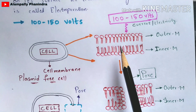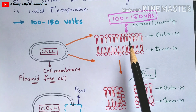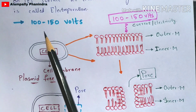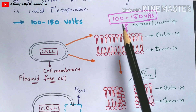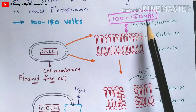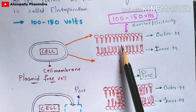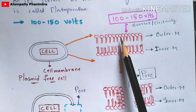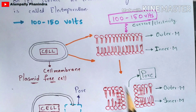Now, what we are going to do is apply a small amount of electricity to this cell membrane. The current applied is 100 to 150 volts of electric current. Once this electricity is applied to the membrane, something happens immediately.